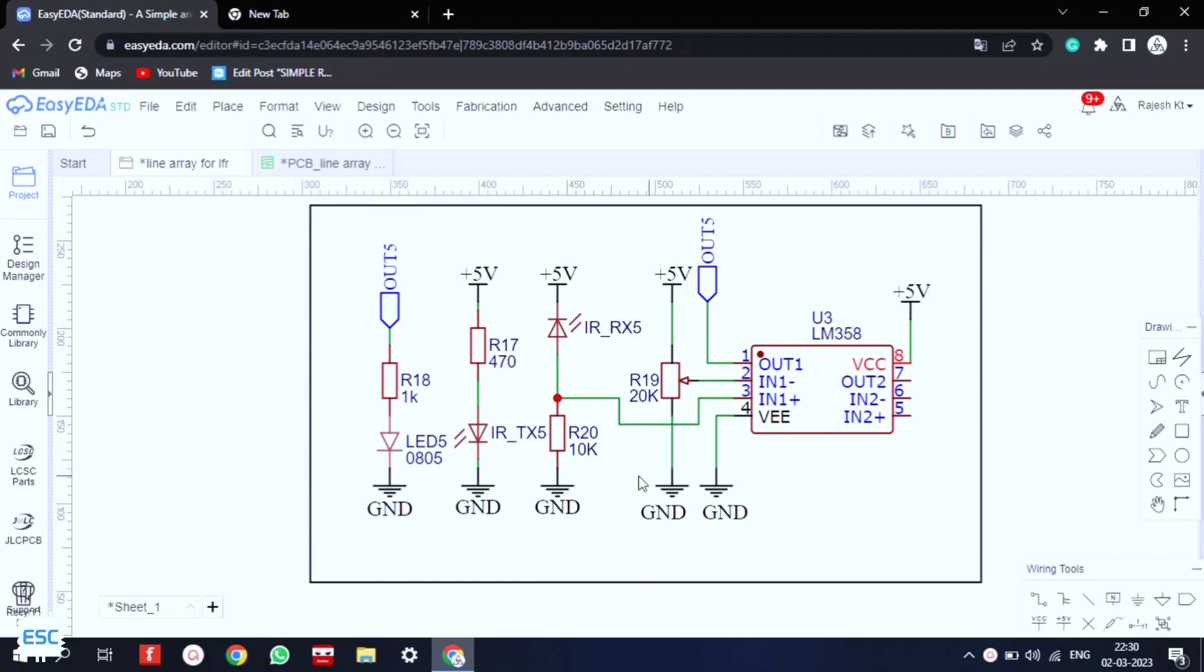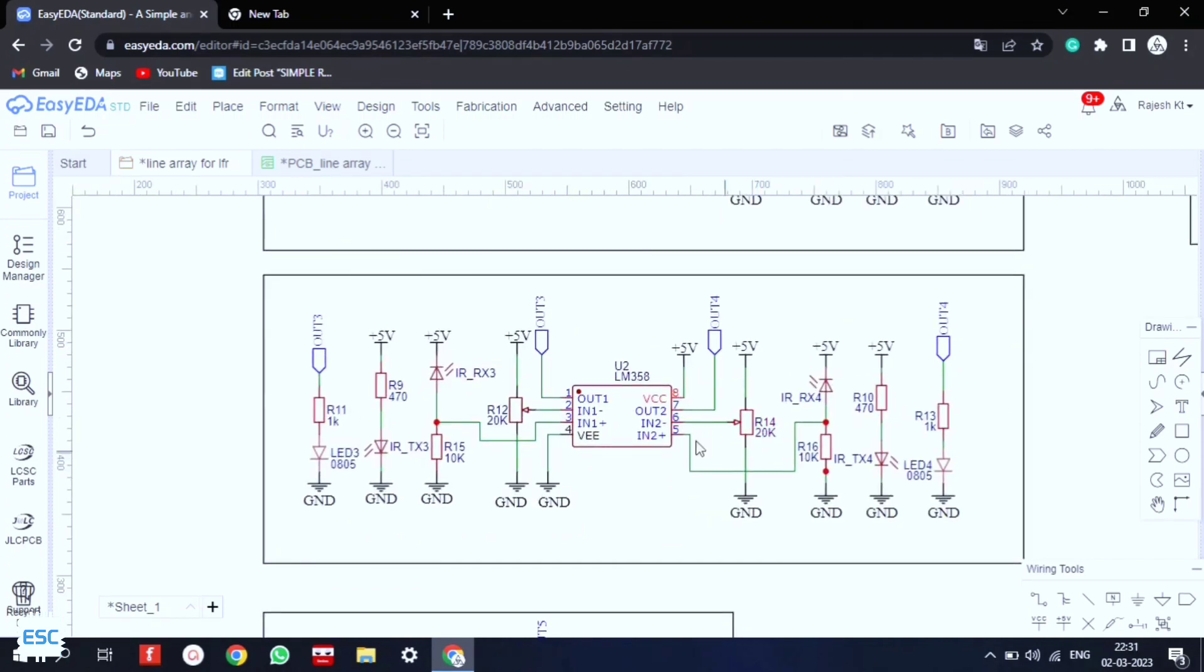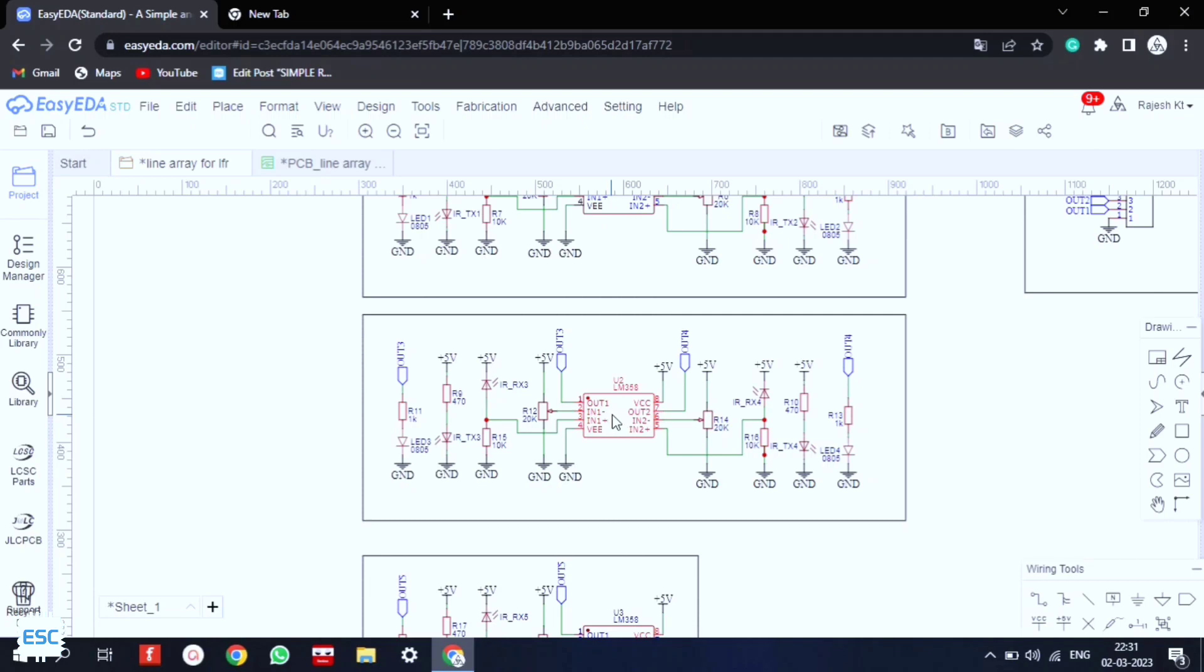Everything started from this LM358 op-amp comparator circuit. Here I connected a variable resistor to set the reference voltage, and the photodiode is connected to the non-inverting terminal of the op-amp. If the voltage crosses the reference voltage, then we get the output. I can connect two sensors to an op-amp, so I added two more op-amps and connected a total of five sensors.